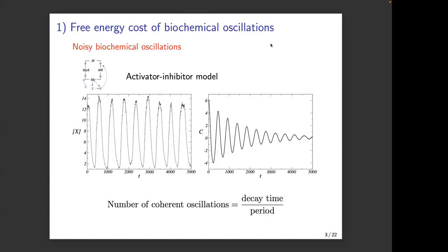A biochemical oscillation — the most famous example would be circadian cycles, those 24-hour cycles that many animals have. Your body enters a sleep mode at night and a wake mode in the morning. We have circadian clocks within ourselves that tell us the time. Even if I put you in a dark room, you should be able to maintain these cycles for a few days before your circadian clock is disrupted.